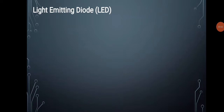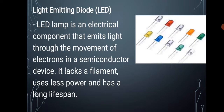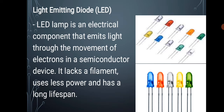Number five is light-emitting diode or LED. An LED lamp is an electrical component that emits light through the movement of electrons in a semiconductor device. Its lack of filament means it uses less power and has a long lifespan. LEDs produce more light than incandescent lamps and help save energy in energy-conserving devices. LEDs are usually assembled into a light bulb to be used as an LED lighting system. These diodes can emit light of an intended color without the use of color filters. The initial cost of an LED is generally high, and these are used to build electronic projects.